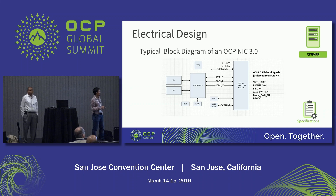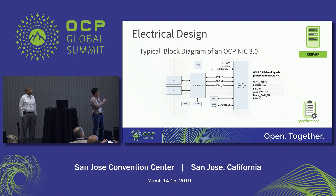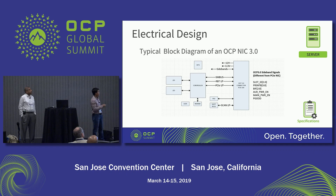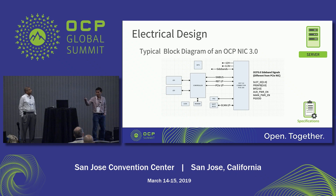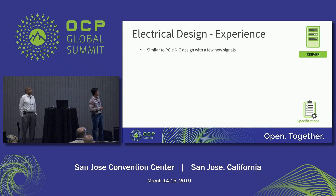From the electrical point of view it's very typical of a PCI NIC or Ethernet controller card — you have I/O on the left, controllers, PCI edge fingers, DRAM, and power supplies. The new signals compared to standard PCI are: slot IDs, present pins, bifurcation signals, aux power enable, main power enable, and power good. Those are the additions in NIC 3.0.